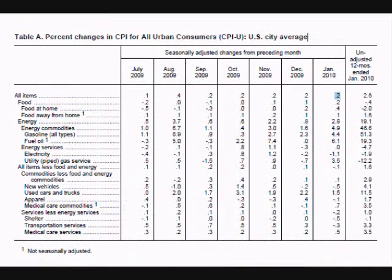The CPI report is issued monthly, about three weeks after the month being reported. The report contains one main table, A, and several follow-up tables. There are also several short summaries of the data for Table A that contain the most important statistics. The two main statistics reported in the media are the seasonally adjusted percent change for the total index from the previous month, and the non-seasonally adjusted 12-month percent change of the total index from the year before.